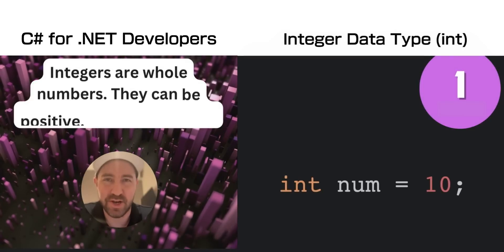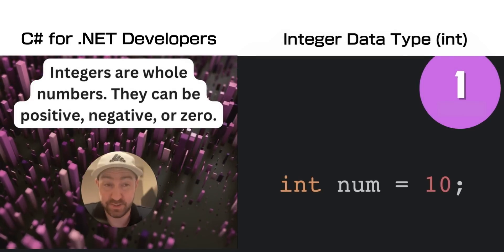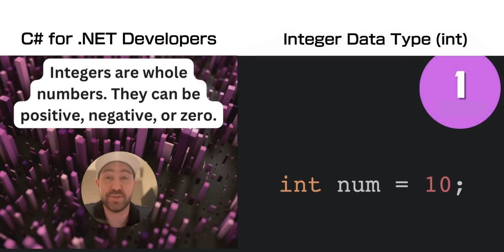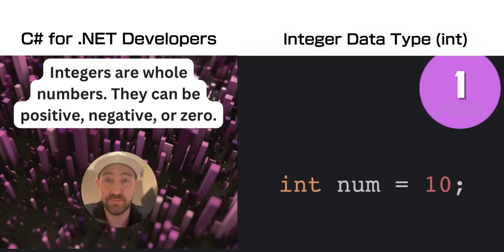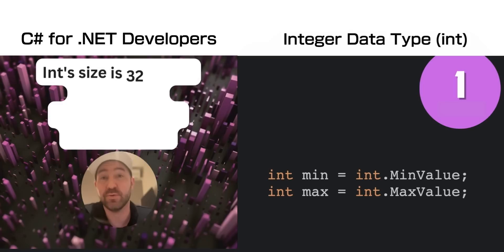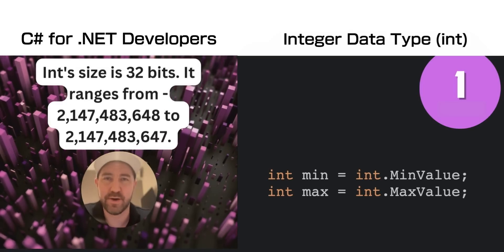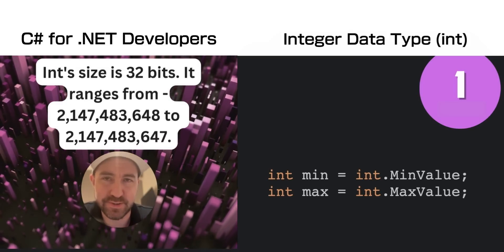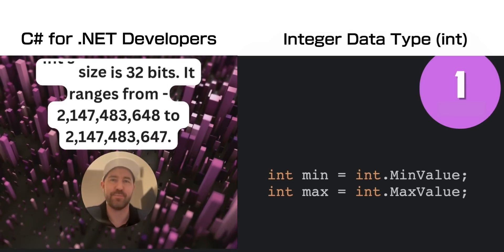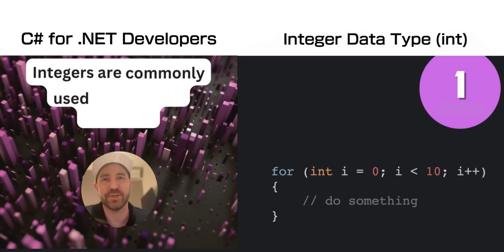Our first data type is an integer, or int. They represent whole numbers, either positive, negative, or zero. They are 32 bits in size, so can get pretty big — over 2 billion in either direction of zero.